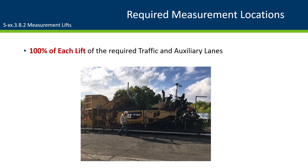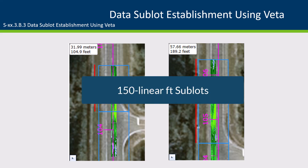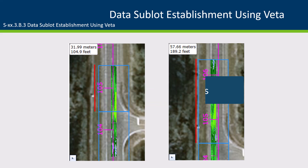Collect PMTP measurements on 100% of each lift for the required traffic and auxiliary lanes. The required traffic and auxiliary lanes were discussed in Module 3, Special Provision Subsection A, all intelligent construction technology methods. Once the data lot is established as previously discussed in Module 3, divide the data lot into 150 linear foot data sublots.